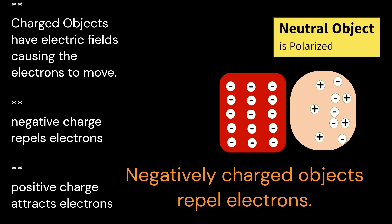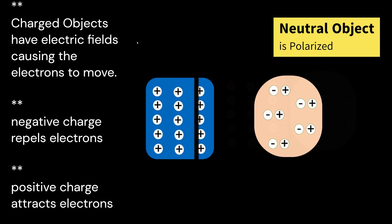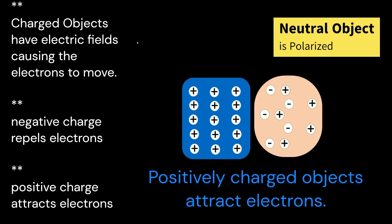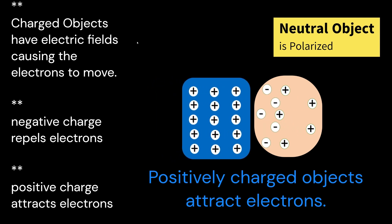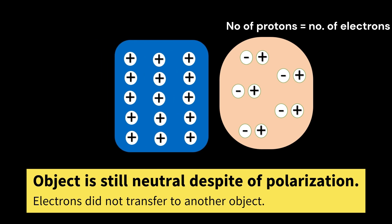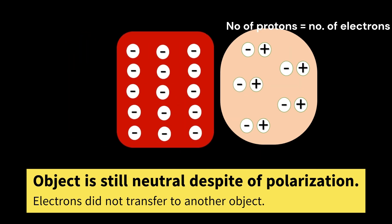The movement of electrons, as opposed to protons, is the primary factor contributing to the polarization effect, influencing the overall charge distribution within the material. It is important to note that in the polarization phase, there is no electron transfer from one object to another, so the object is still electrically neutral, and only the ends or sides of the object have opposite charges.